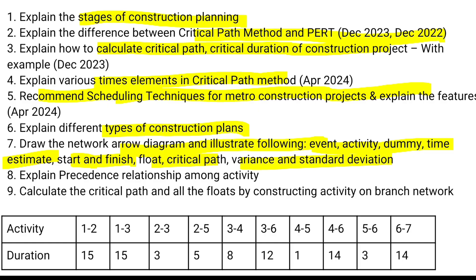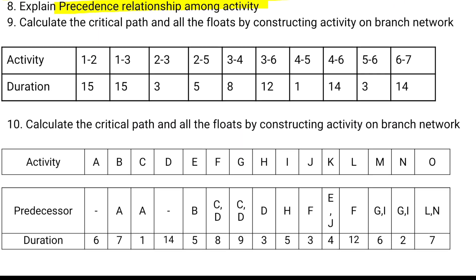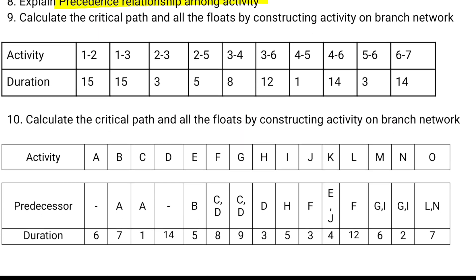The next question covers precedence relationships among activities: start to start, start to finish, finish to start, and finish to finish. Finally, a problem-based question where activity and duration are given — find the critical path, critical duration, and activity float. These are all the important questions in unit five. We will see more in the next video, thank you.